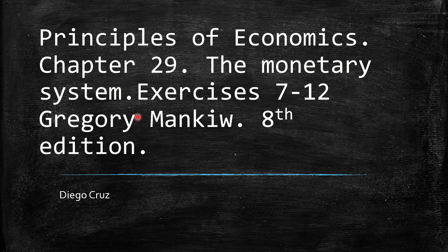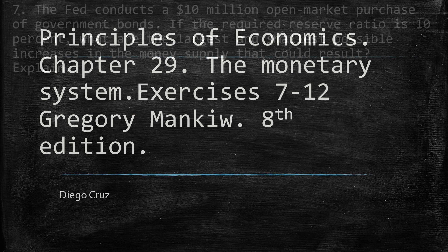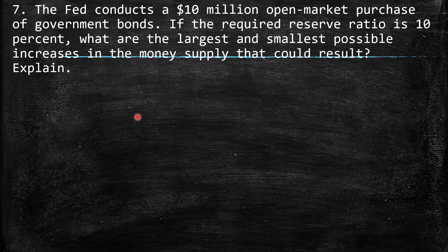Hi everyone, welcome to this video. We're going to discuss exercises 7th to 12th of Chapter 29, The Monetary System, Principles of Economics. Remember, this is a book by Gregory Mankiw. Question 7 says: The Fed conducts a $10 million open market purchase of government bonds. If the required reserve ratio is 10%, what are the largest and smallest possible increases in the money supply that could result?